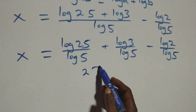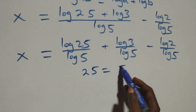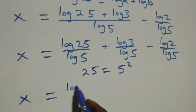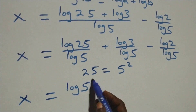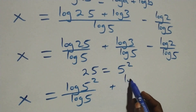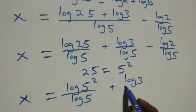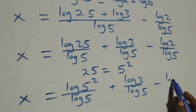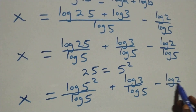We can also write 25 as 5 squared. So we have x equals log(5²) over log 5, plus log 3 over log 5, minus log 2 over log 5.